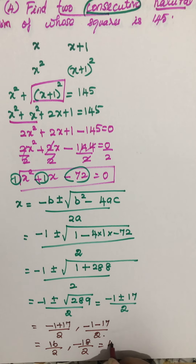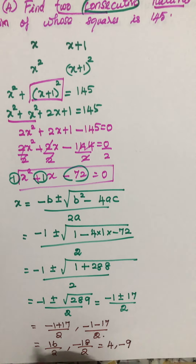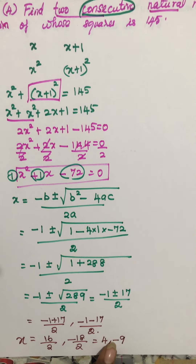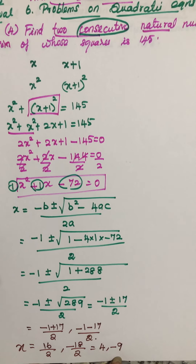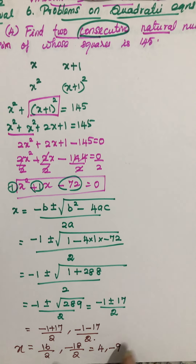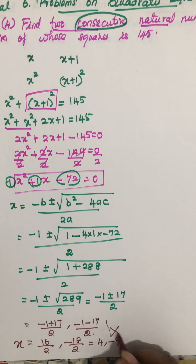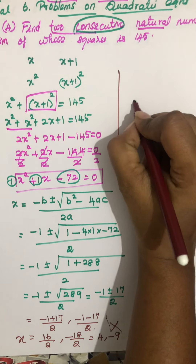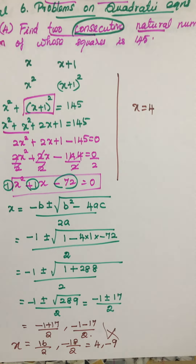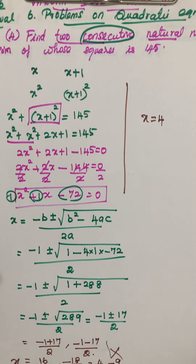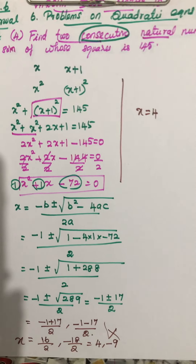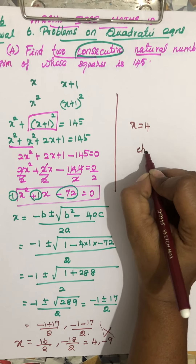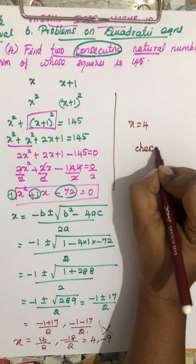So the values of x are 8 and minus 9. Since it is given that x is a natural number, we do not take minus 9. Therefore x equals 8.